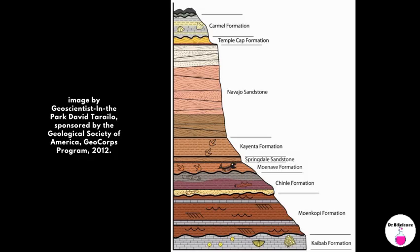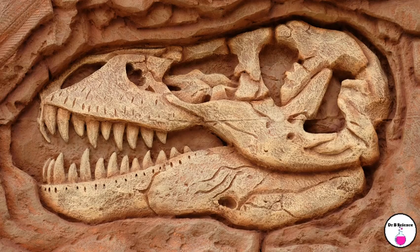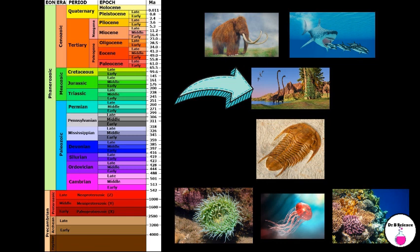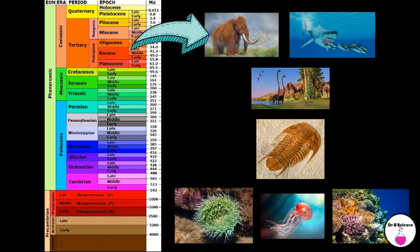We also use the rock layers to establish relative ages of events in Earth's history, meaning we can determine which events happened before others. For instance, if we see a layer with dinosaur fossils below a layer with mammal fossils, we can conclude that the age of dinosaurs came before the age of mammals.